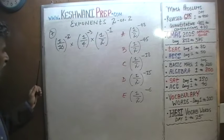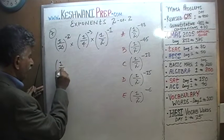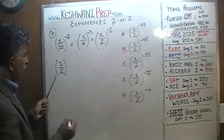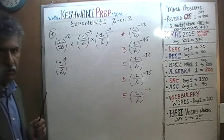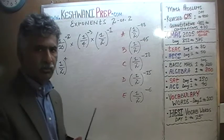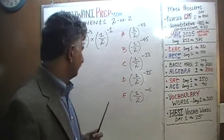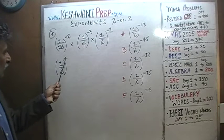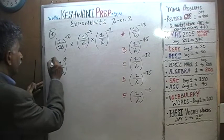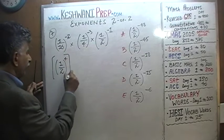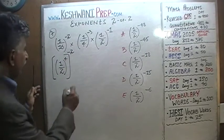We need to convert 1/16 to a power of 1/2. We can write it as (1/2) raised to 4, because 2 raised to the 4 is 16 — 2 squared is 4, 2 cubed is 8, then 16. So (1/2)^4 equals 1/16. And outside we have the exponent negative 2. That takes care of the first part.